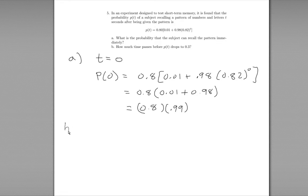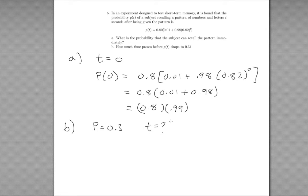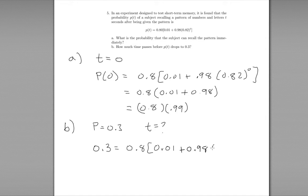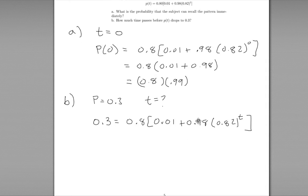Part B asks how long it will take before the probability is 0.3. In this question, p is equal to 0.3, and we need to find what time t equals. We plug in 0.3 for our probability, so now we have 0.3 equals 0.08 times (0.01 plus 0.98 times 0.82 to the power of t), where t is unknown.